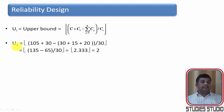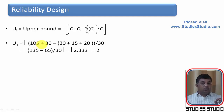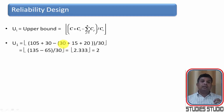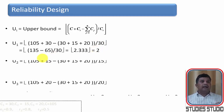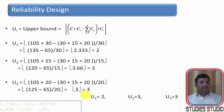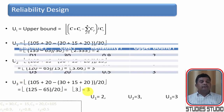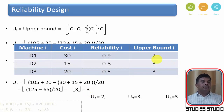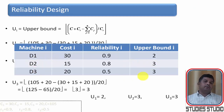To find the upper bound for each device, we use the formula: upper bound for device i = floor((C − sum of all costs) / c_i + 1). For D1: (105 − (30+15+20)) / 30 gives 2. For D2 it gives 3, and for D3 it also gives 3. So we can buy at most 2 copies of D1, 3 copies of D2, and 3 copies of D3.